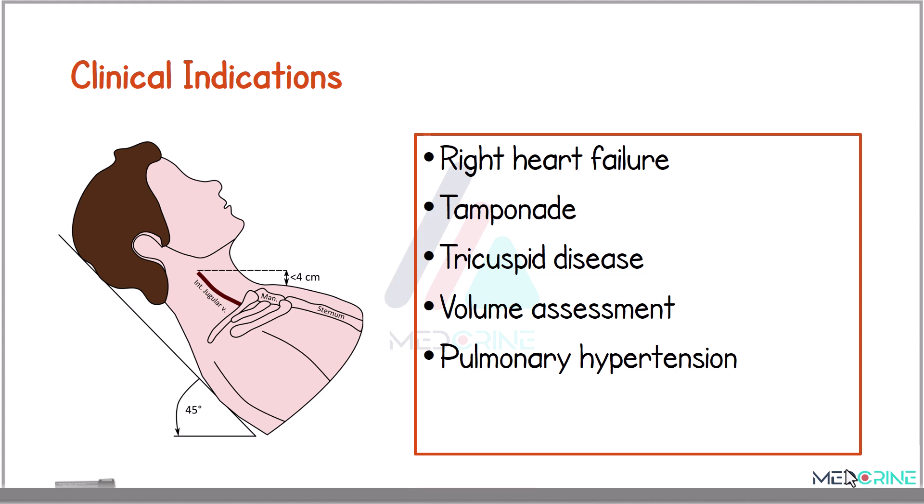What are some of the clinical indications for jugular venous pressure assessment? JVP assessment is crucial in evaluating conditions such as right heart failure, cardiac tamponade, tricuspid diseases, intravascular volume status, and pulmonary hypertension.